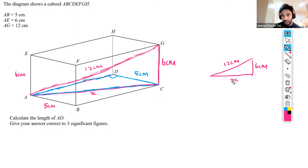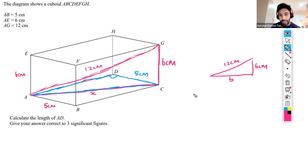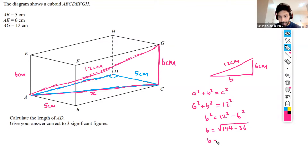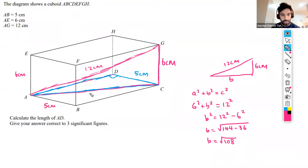We'll call the unknown side B rather than C to avoid confusion. Applying Pythagoras: a squared plus b squared equals c squared. So 6 squared plus b squared equals 12 squared. Therefore b squared equals 12 squared minus 6 squared, and b equals the square root of 144 minus 36, which is root 108. The distance of AC is root 108.